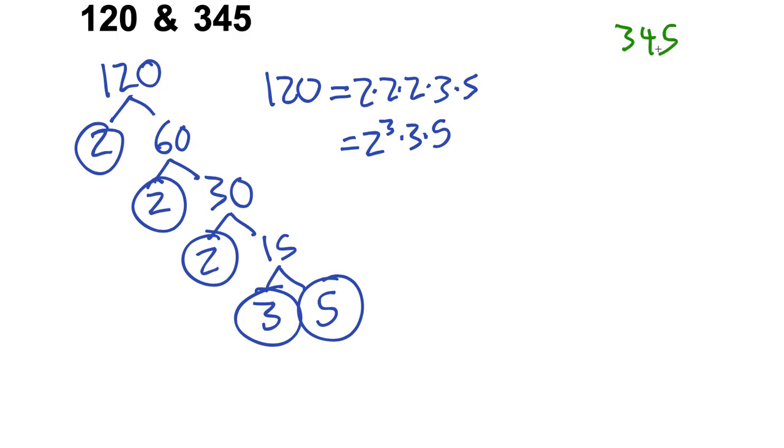Okay so 345, let's do this one. Immediately 5 comes to mind. So 5 and 30 goes 6 times, so I think it's 5 and 69. 69 can be further subdivided into 3 and 33—no, no, 3 and 23. Oh my gosh. Okay so this one ends rather abruptly.